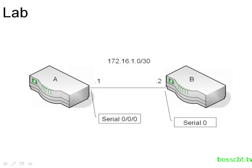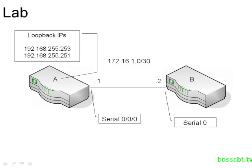Before we jump on the router to make the configuration, let's take a look at our lab. We have two routers connected with a serial interface using IPs from the 172.16.1.0/30 subnet, and we're going to focus on router A. Router A has two loopback interfaces configured with two IP addresses. Without any intervention, router A would choose .253 for the router ID by the process we just discussed. We're going to use the router ID command to force router A to choose the numerically lower IP address instead, just to illustrate how this command forces the router to use the value you want.